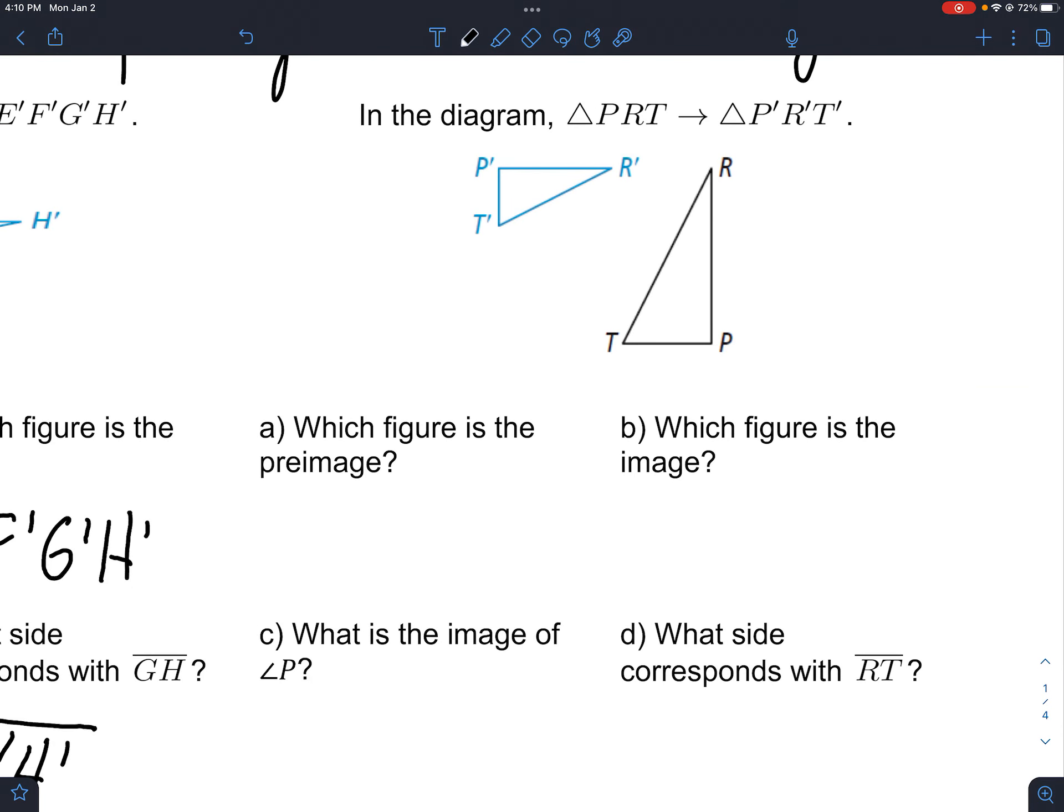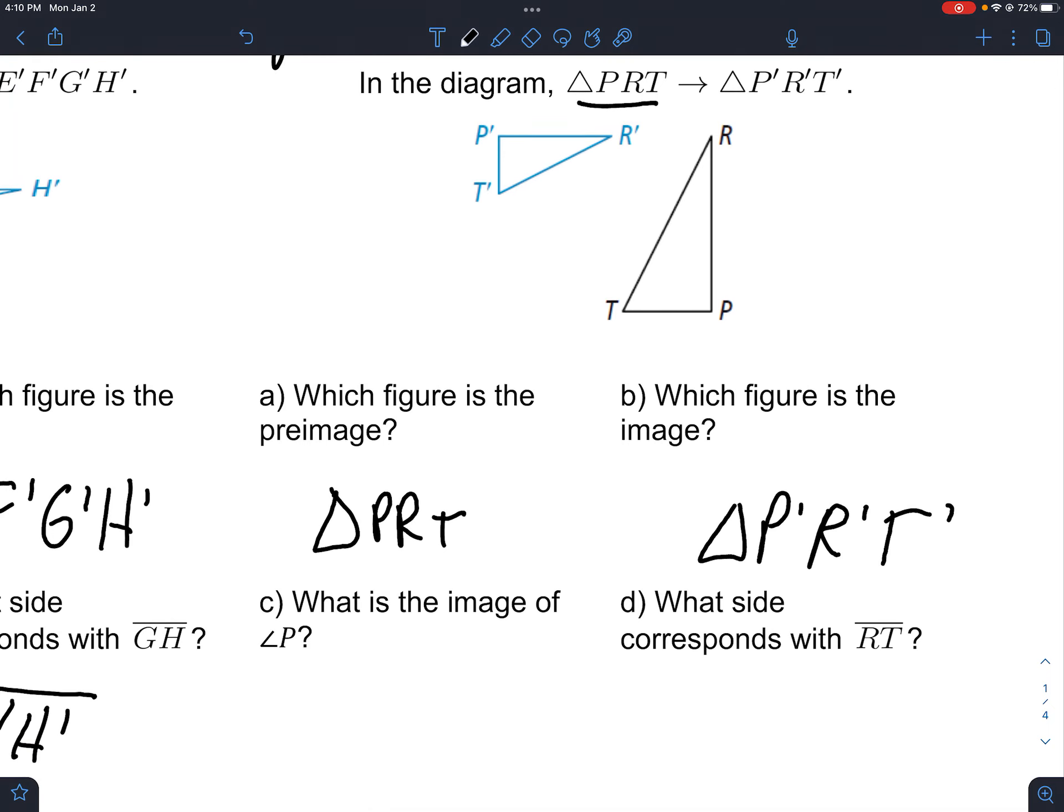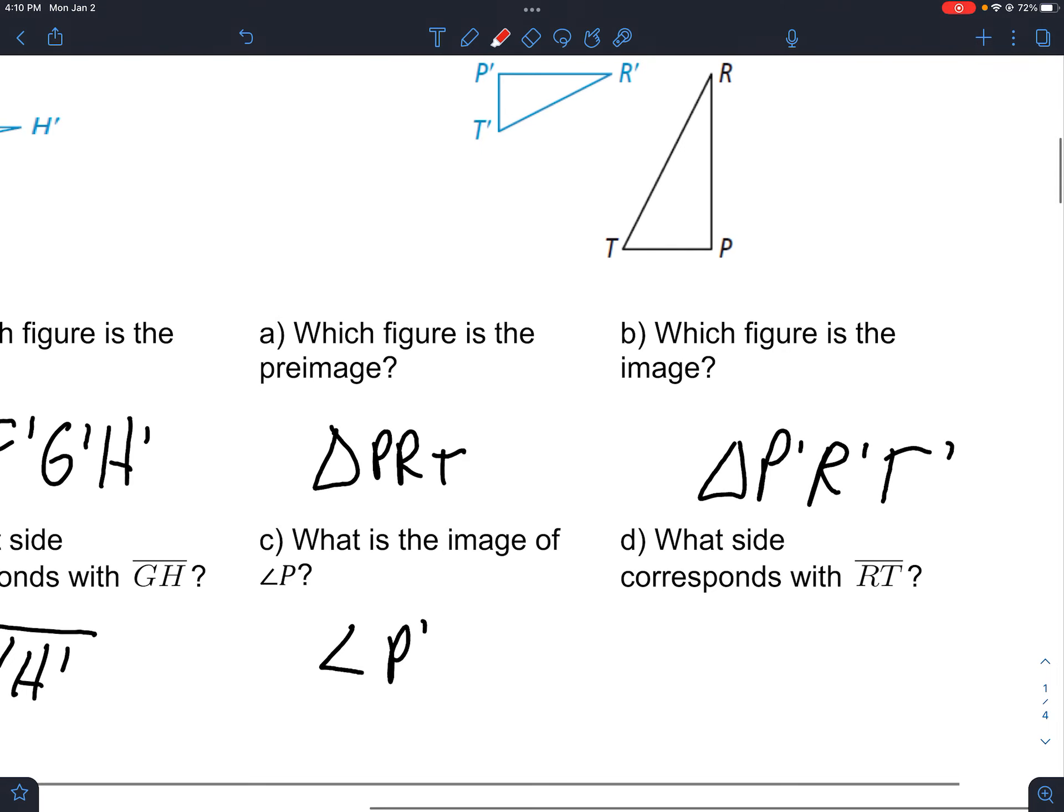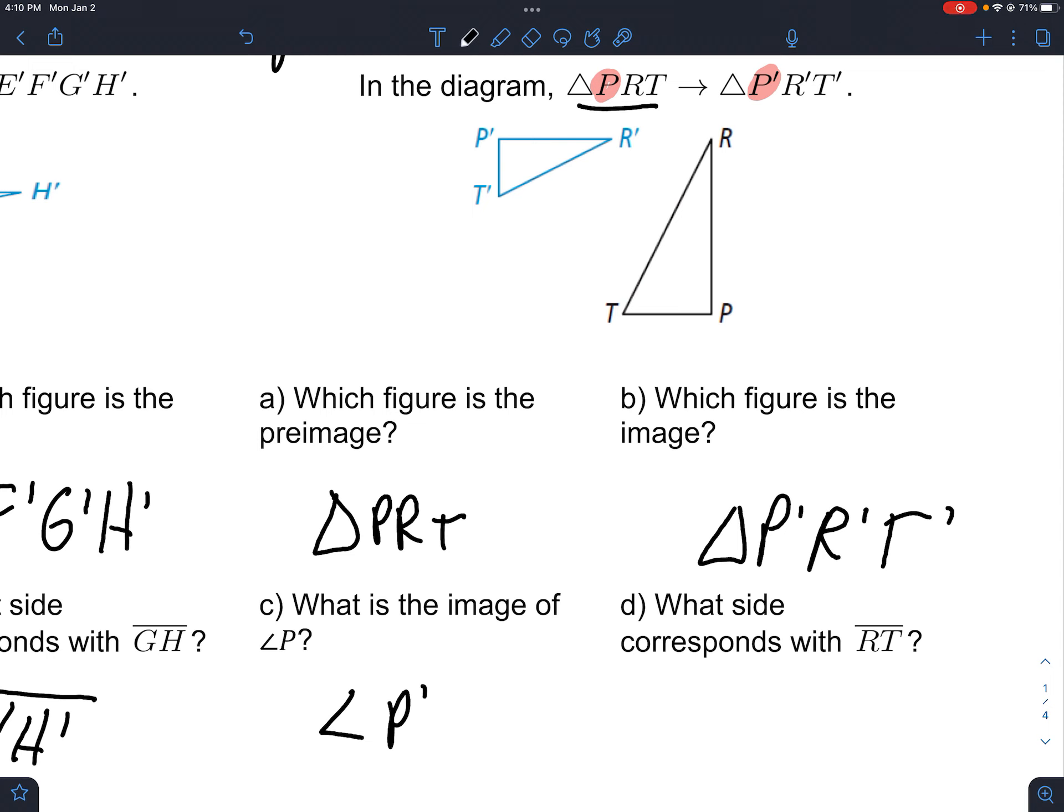We could also have this, where the pre-image is the before, and the after is still a triangle. Angle P becomes angle P prime, and we can see that because they correspond - they both are first. So P becomes P prime, and RT eventually turns into R prime T prime.